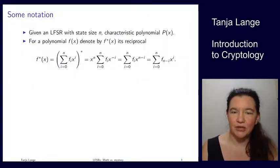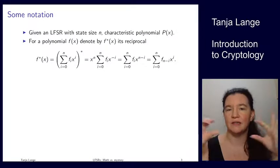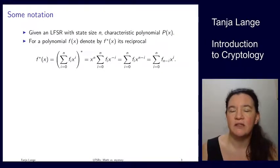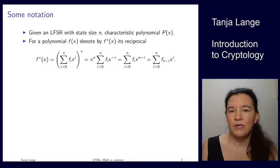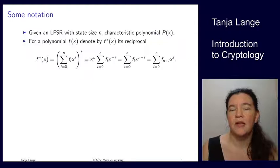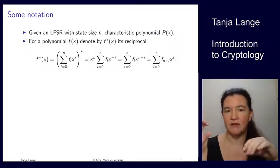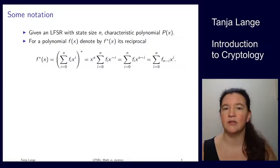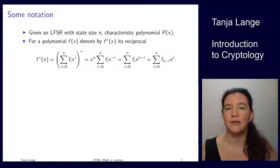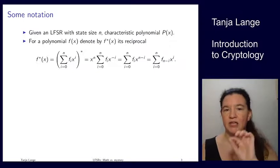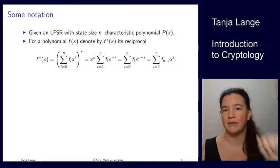So let's introduce some notation. We're going to be dealing with LFSRs, and we're always going to fix state sizes, and then we're going to take p as a characteristic polynomial. We will need a property of polynomials called the reciprocal, which means you take the polynomial, identify its degree n, multiply by x to the n, and change the exponent from x to the i to x to the minus i.